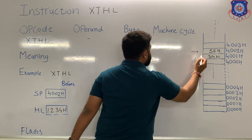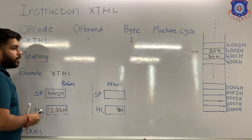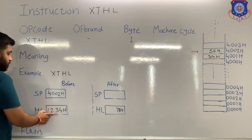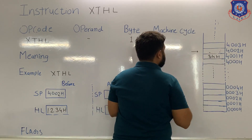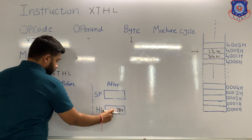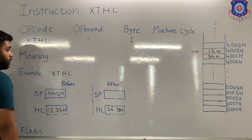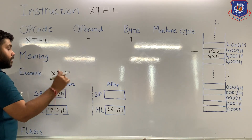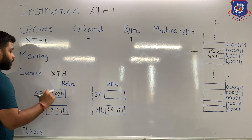Now the stack pointer is pointing at the next location. Again, the processor will perform the exchange of data, but now with the higher byte of the HL pair. So 12H will be stored in the stack where the stack pointer is pointing, and the data — that is 56H — will be transferred to the higher byte of the HL pair.